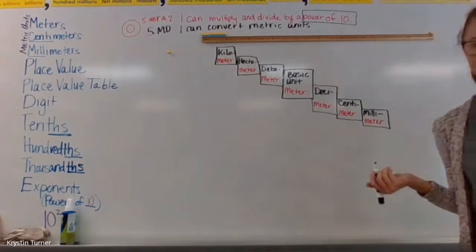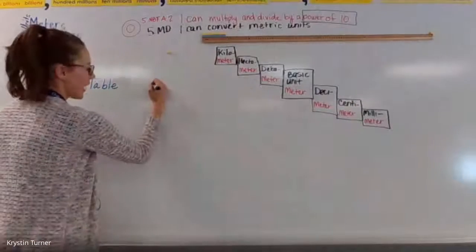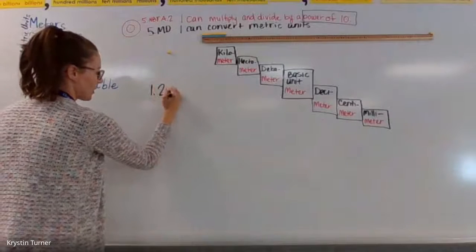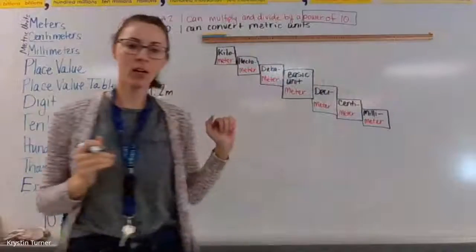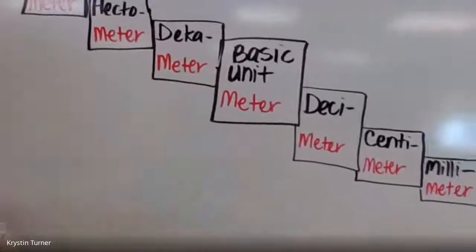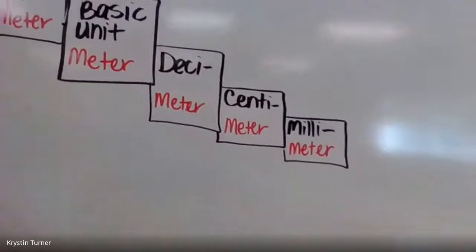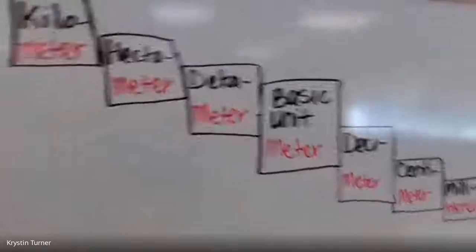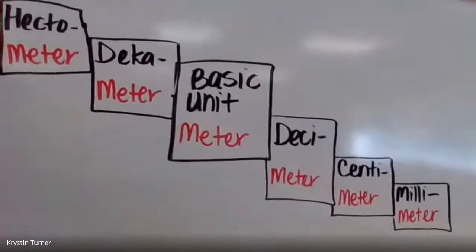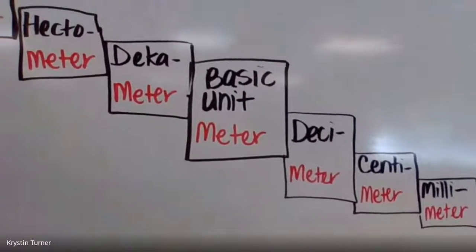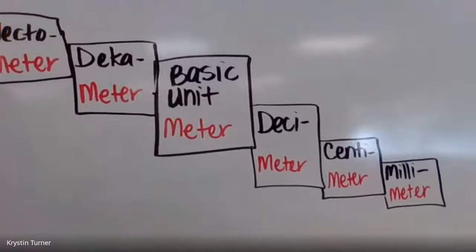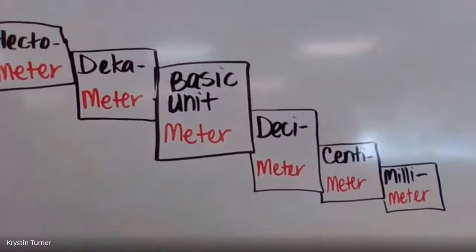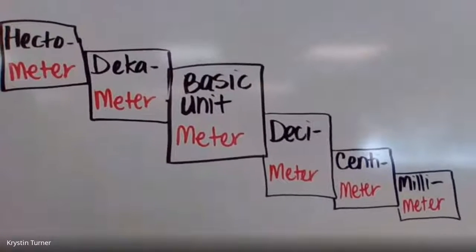Let's do some practice problems together. We have 1.2 meters — the basic unit, meter. In our conversion chart, we start with our basic unit in the middle. There are three smaller units to the right and three larger units to the left. Starting with our basic unit, then we go deci, centi, milli — and it just gets smaller and smaller as you go to the right, just like in a place value chart, where anything behind the decimal is smaller than our basic unit.